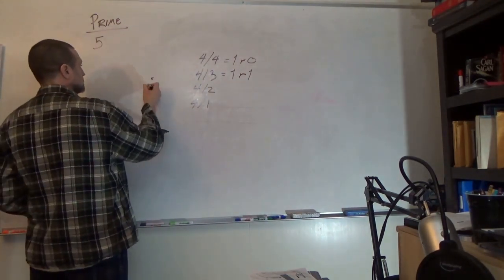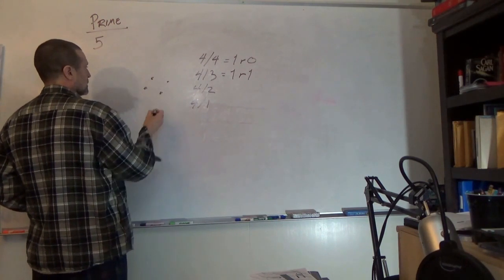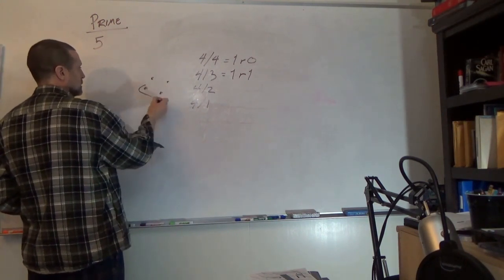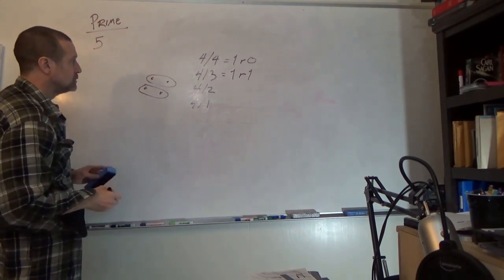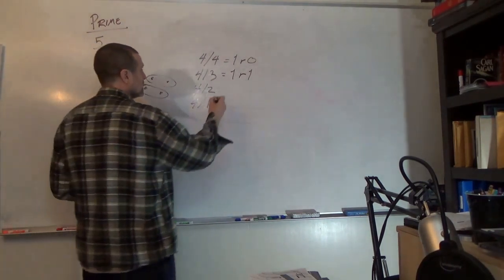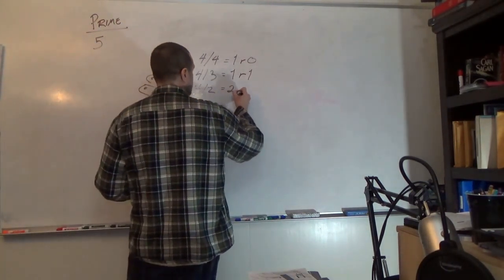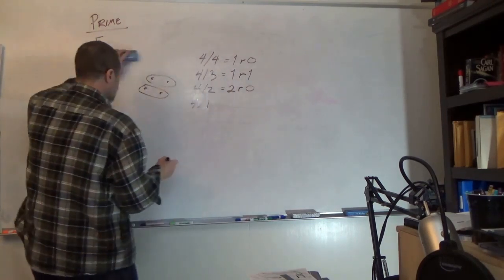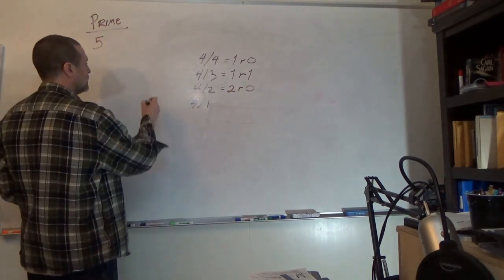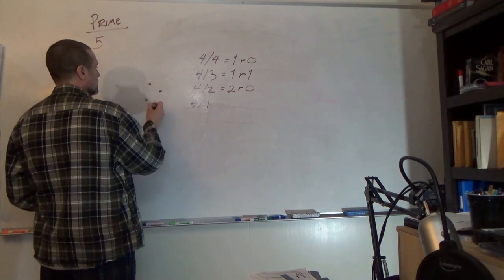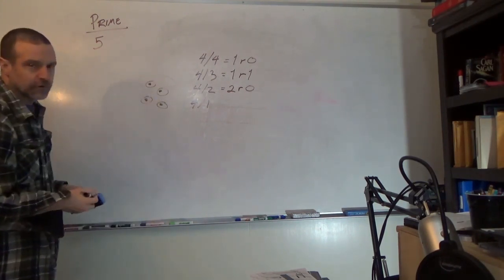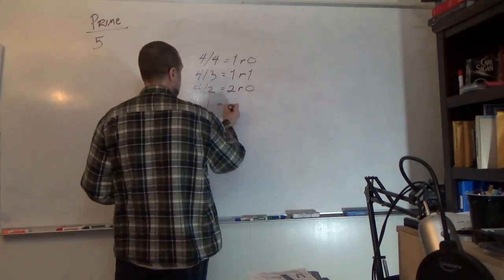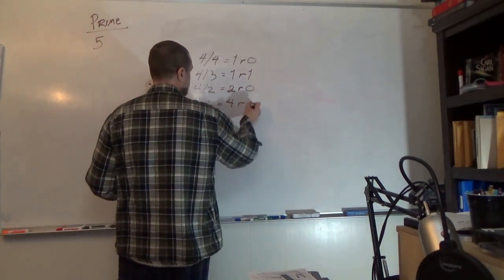4 divided by 2: 2 groups of 2, no remainder. And now, 4 divided by 1: 4 groups of 1 with no remainder.